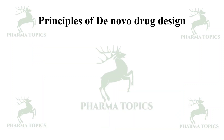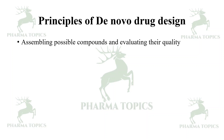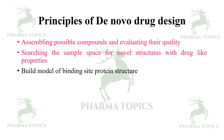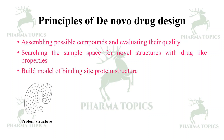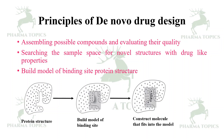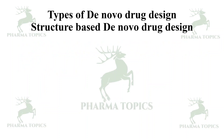The principles of de novo drug design involve assembling possible compounds and evaluating their quality, then searching the sample space for novel structures with drug-like properties. You build a model of the binding site protein structure, understand the binding spot, and then construct a molecule such that it fits into this model.